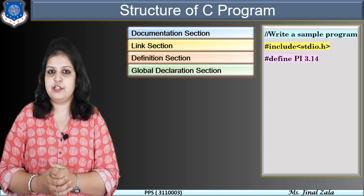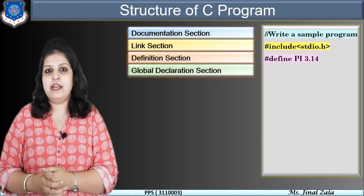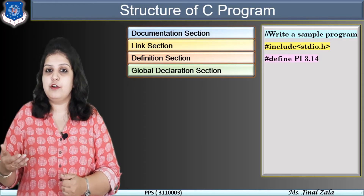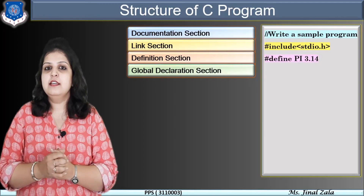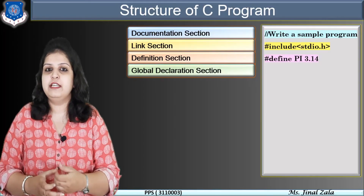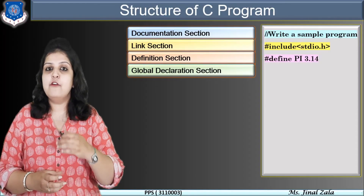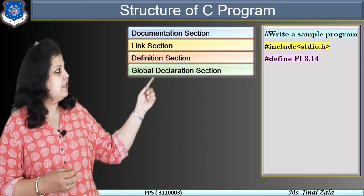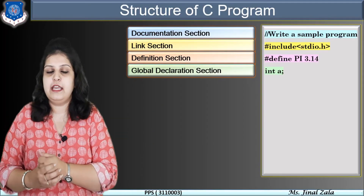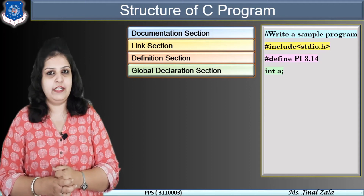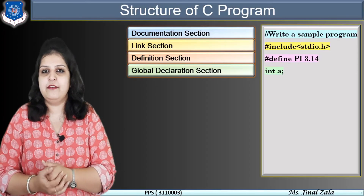Next is the global declaration section — it is an optional part. When you have variables that you want to use in different functions, you must declare these variables globally, meaning outside all the functions. For example: int a — this is a global declaration of a variable. In this section, we can also declare user-defined functions.